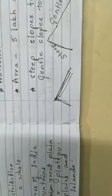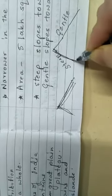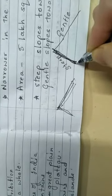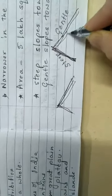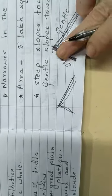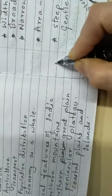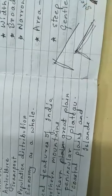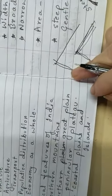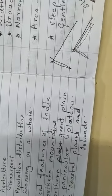One more important point: the slope of the northern mountains is steep towards India and gentle towards Tibet. These are the features of the northern mountains: highest peaks of the world, deep valleys, gorges, glaciers, and mountain passes. This is the highest mountain range of the world.